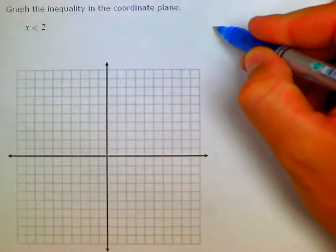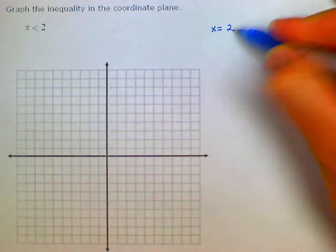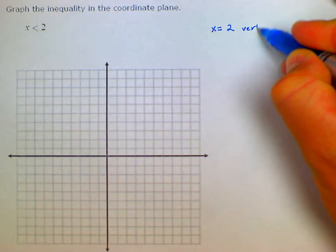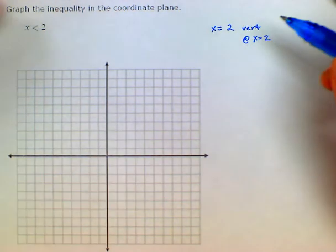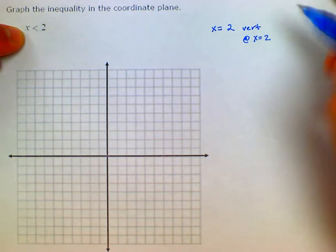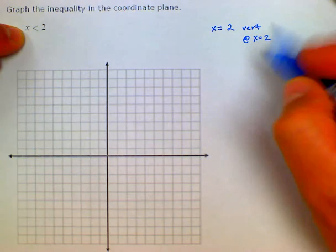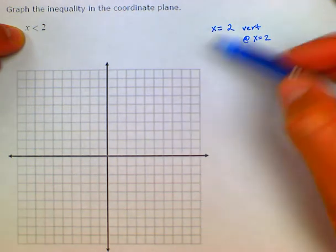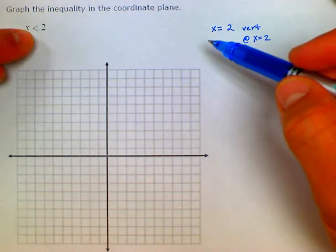If you were given the equation x equals 2, we know that's a vertical line at x equals 2. Here, we also need to remember that we're dealing with inequality, so it's not going to be just the line, but it's going to be solutions that are less than 2.